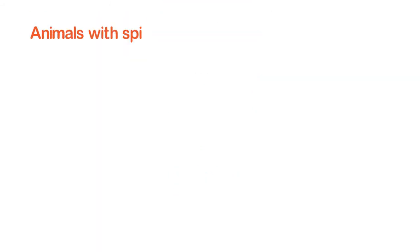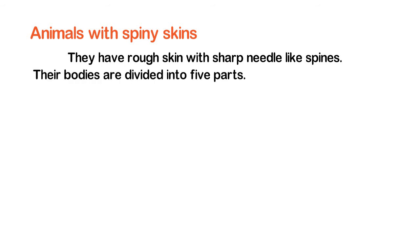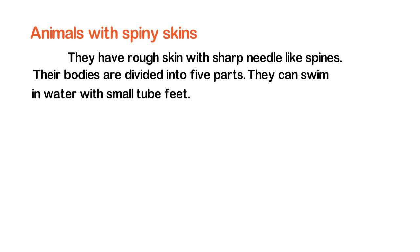Animals with spiny skins have rough skin with sharp needle-like spines. Their bodies are divided into five parts. They can swim in water with small tube feet. Starfish and sea urchins are examples.